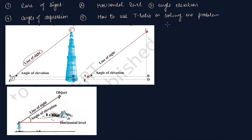अब हमारा तीसरा concept है: angle of elevation। Angle of elevation is the angle between the line of sight and the horizontal level। तो यदि हम first figure के उपर अपना ध्यान डालें, तो उसमें आप point A, B को जोड़ देते हैं। इन lines के बीच का जो angle है, इस angle को हम बोलते हैं angle of elevation। The angle of elevation is the angle between the line of sight and the horizontal level।